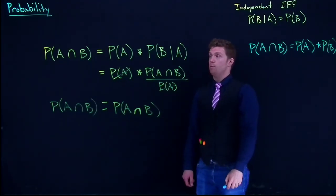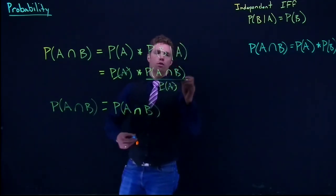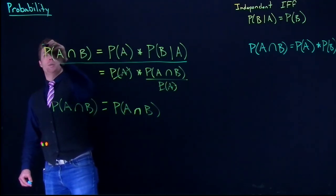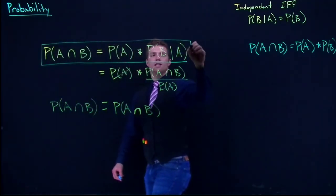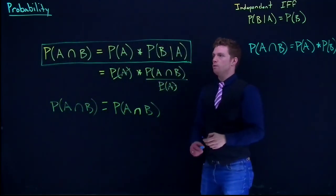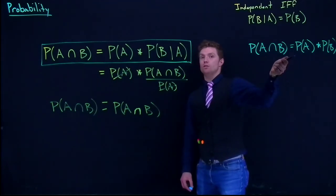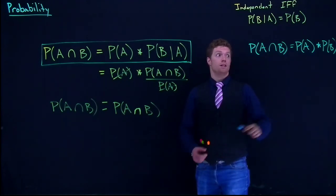rules for multiplication. This right here is the general equation, and it works for both independent or dependent variables. If it happens to be independent, this is what it shortens down to: probability of A multiplied by the probability of